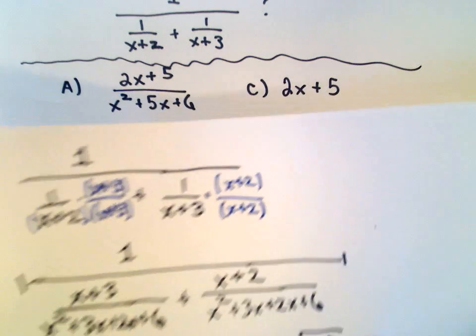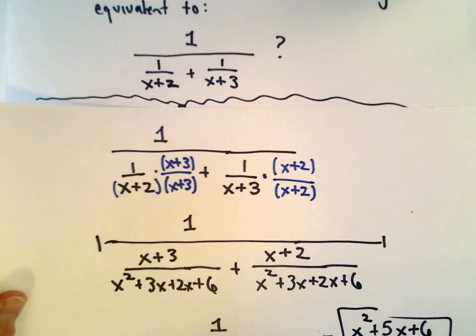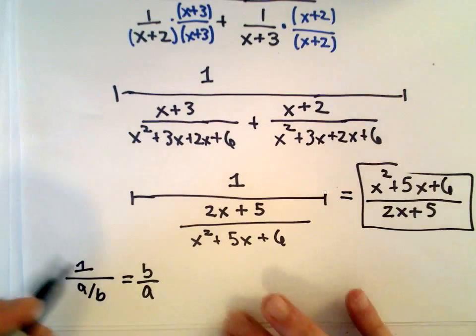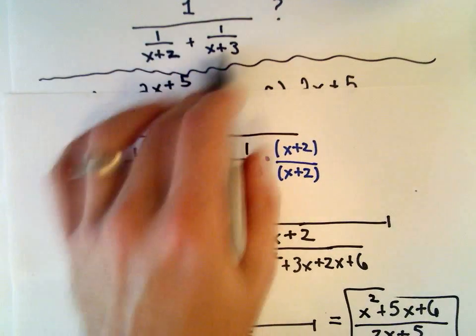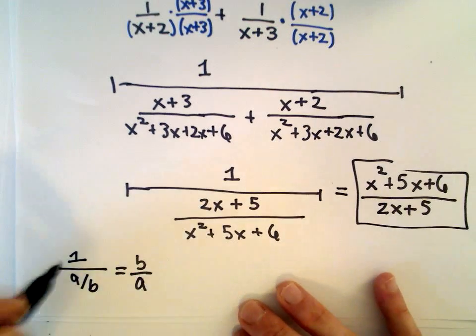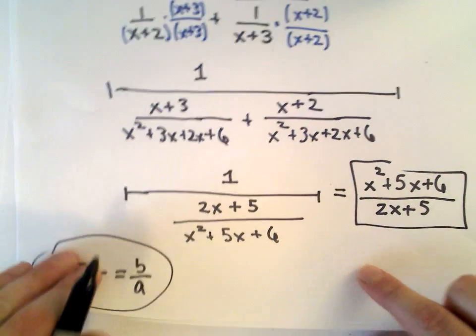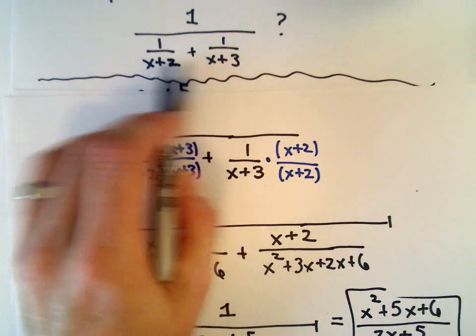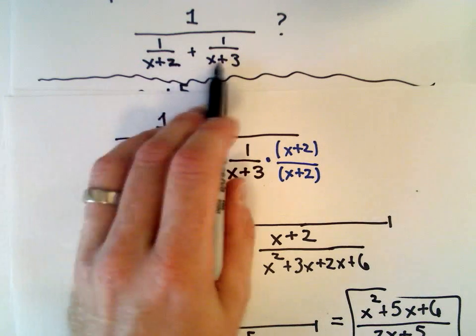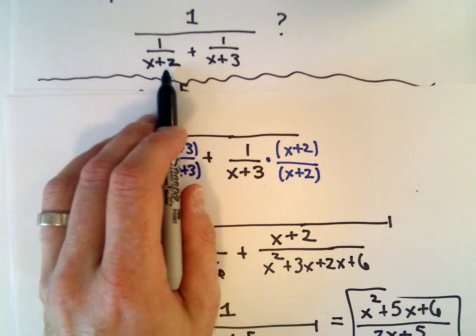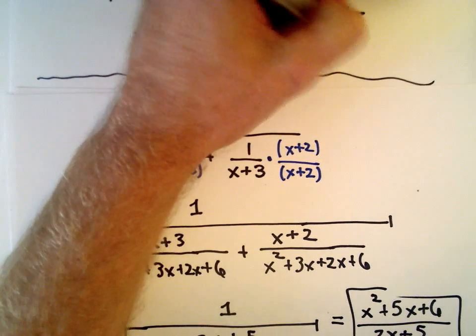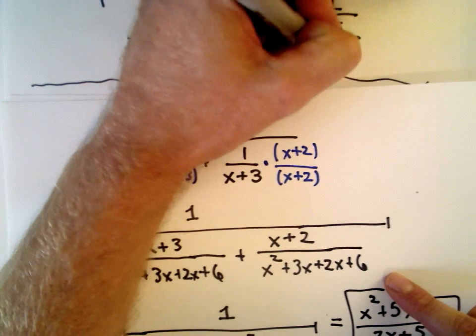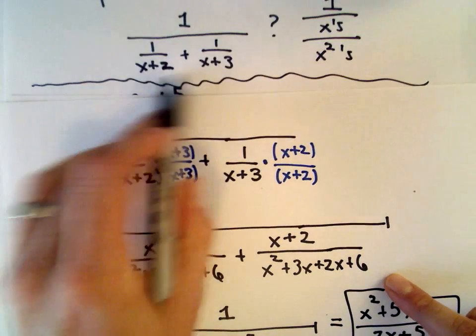To go back to what I said earlier, how could I figure this out without doing any work? I recognize I've got 1 over some stuff—1 over a fraction when I combine this, which is going to flip the fraction. Once I get a common denominator, I'll have (x+3) times (x+2). That's going to give me 1 over something involving x's and something involving x² in the denominator.